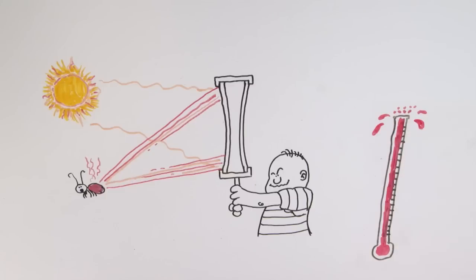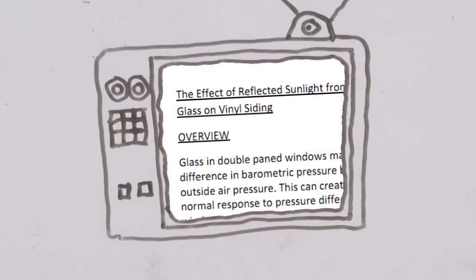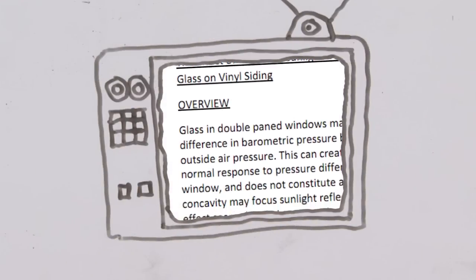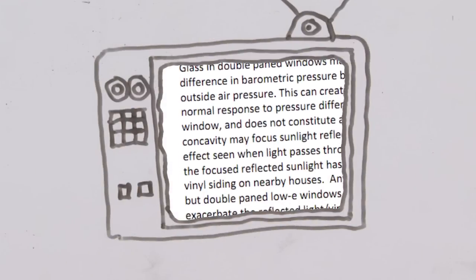Anything in the path that can't withstand the intense heat of this reflection will be damaged. NAHB listed a range of materials reported damaged by reflected sunlight.